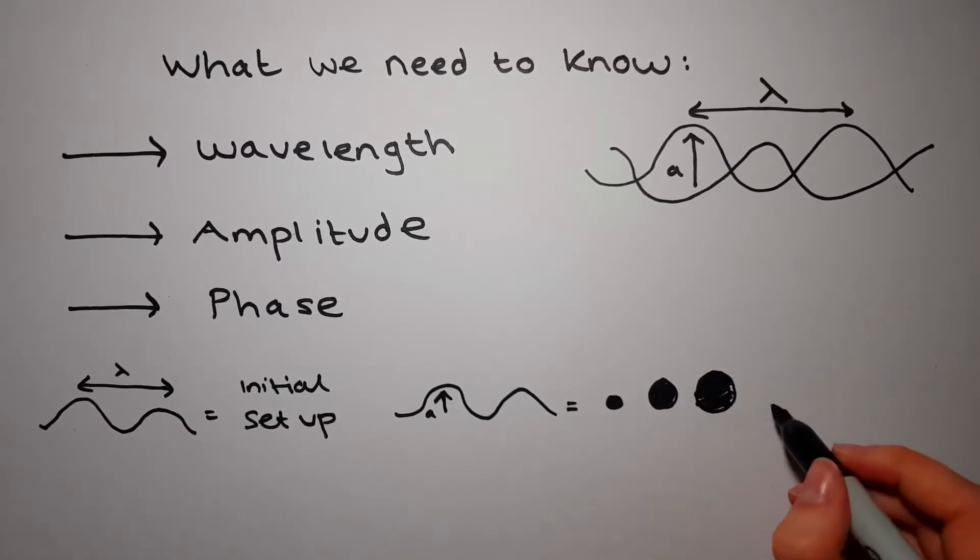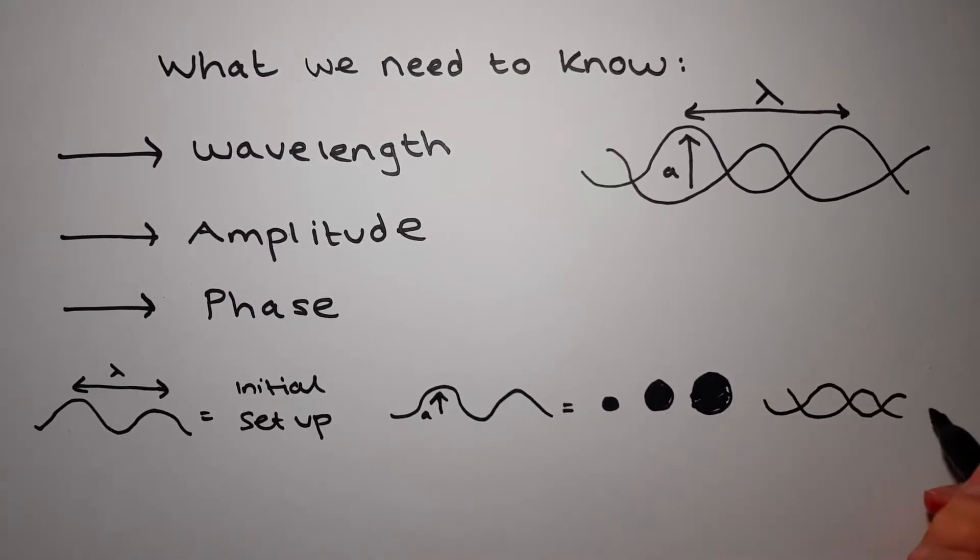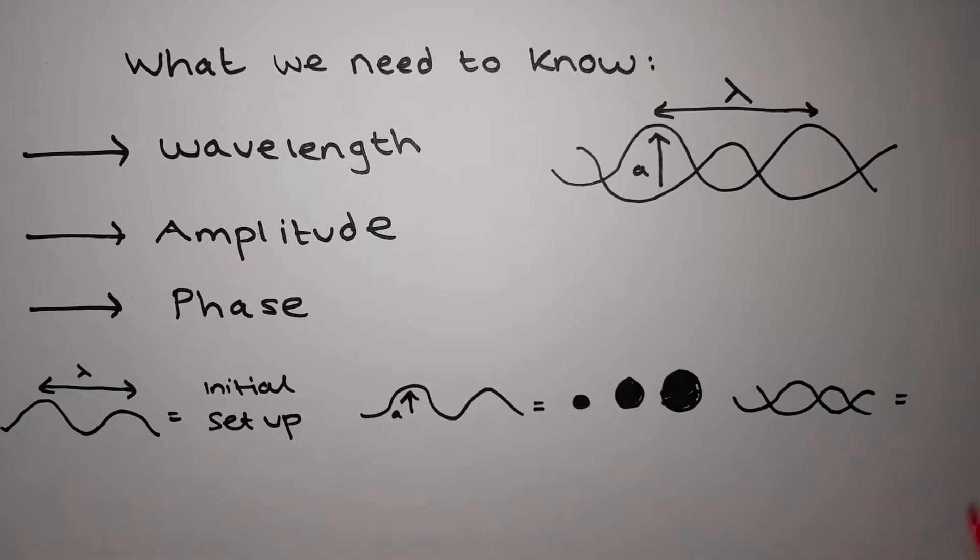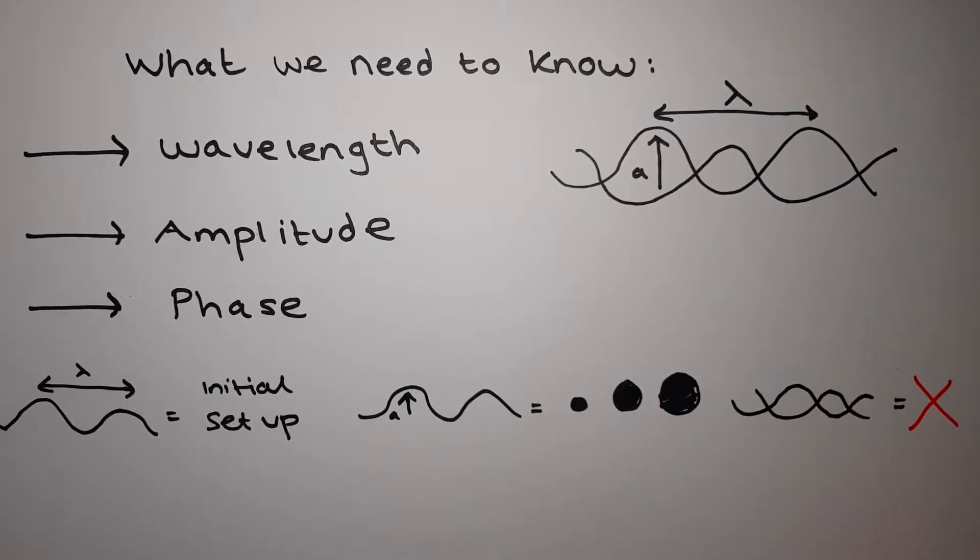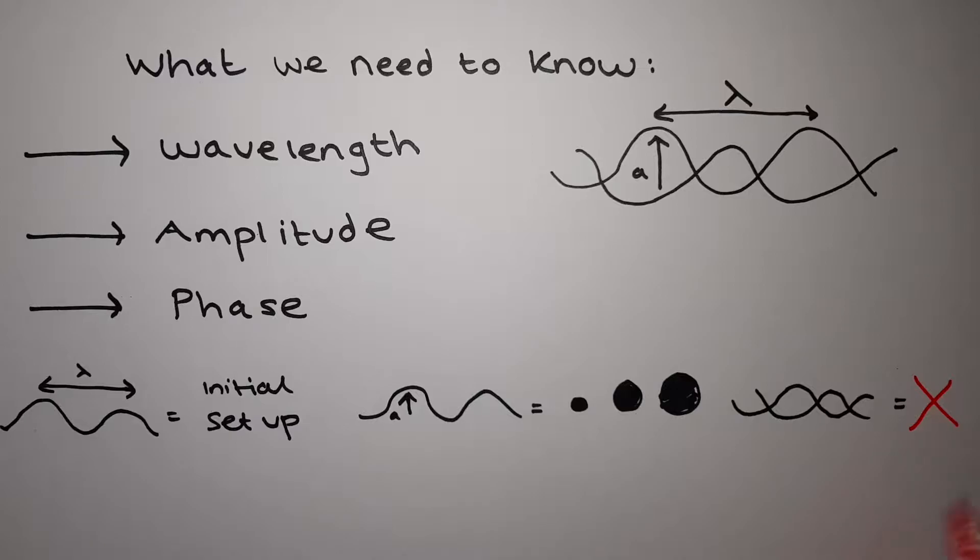However, the phase—the point the wavefront has reached in its cycle—cannot be measured directly. Only certain angles of incidence will result in in-phase diffraction from those sets of planes.